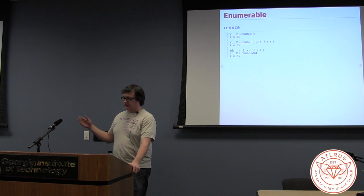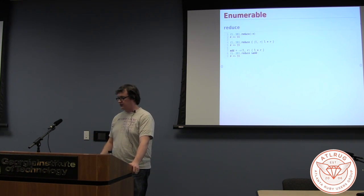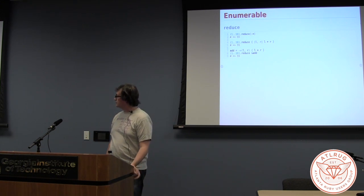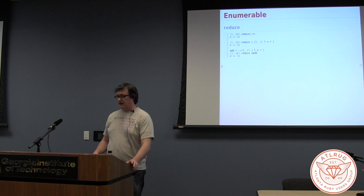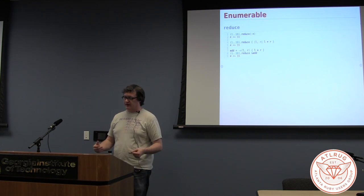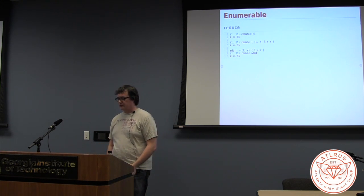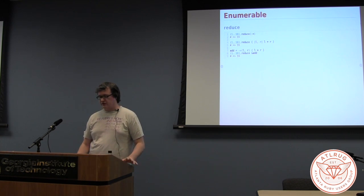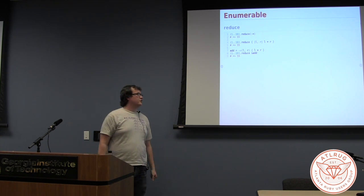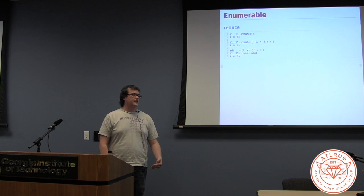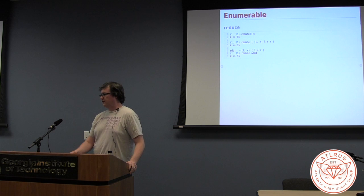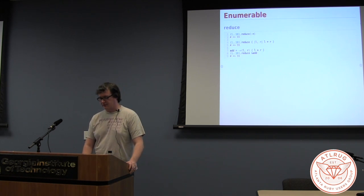We've got the same thing for reduce. We're using a special syntax to sum these values, then using a block syntax to sum the values, and then making a lambda that is our function to sum the values. This is all showing the different ways of calling the Enumerable module and its methods in Ruby land that should hopefully be familiar, because you're going to see things that look very similar to this once we hit Bacon.